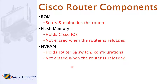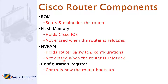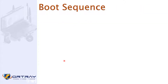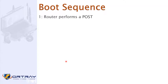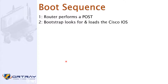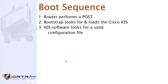The configuration register value controls how the router boots up. The boot sequence is critical to understand: the router performs a POST (Power-On Self-Test), then the bootstrap looks for and loads the Cisco IOS software. Once IOS is loaded, the router looks for a valid configuration file stored as the startup configuration in NVRAM. If no startup configuration file is found, the router enters setup mode.